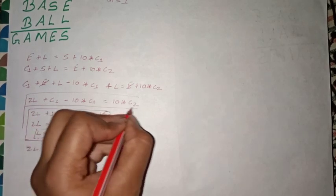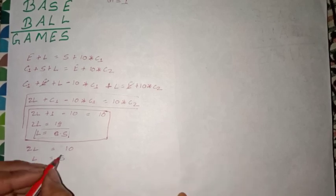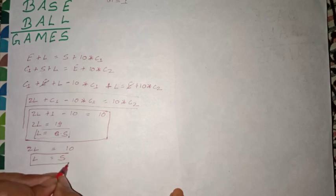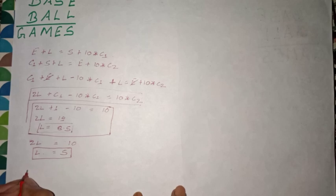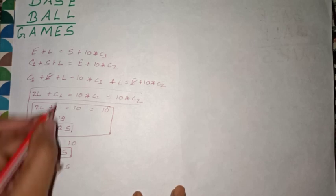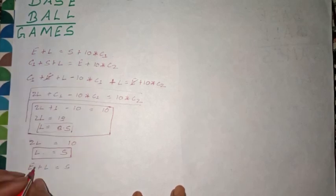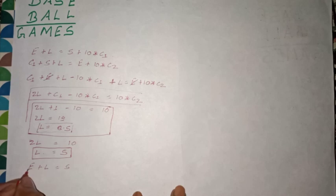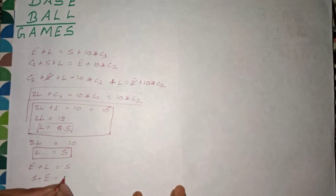So 2L, c1 value is 0 so this will be 0, and this will be 10. We have L equals 5. Now put this L value in the first equation: E plus L equals S. Because c1 is 0 and L is 5, we get S equals E plus 5.